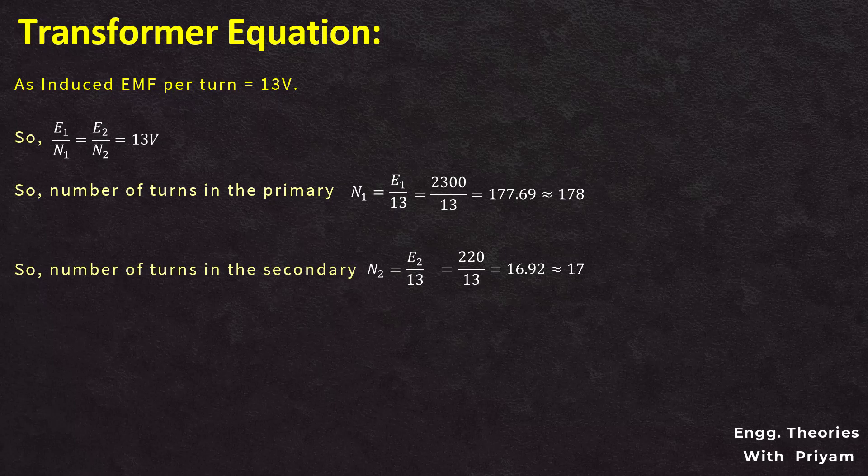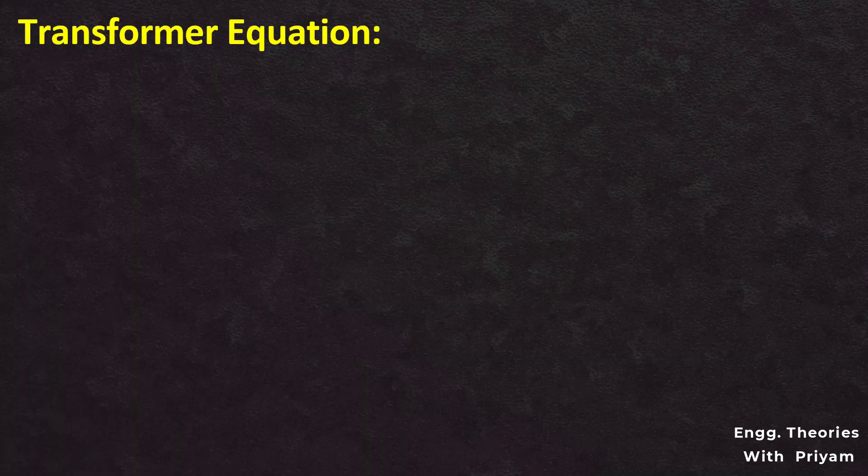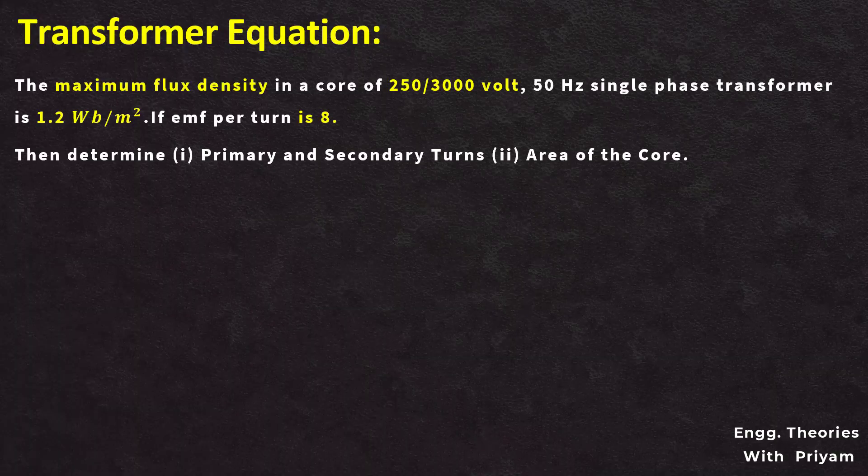Now let's see another mathematical problem where we are given the rating of a transformer core of 250 by 3000 volt, supplied by a 50 hertz single-phase supply, which has the maximum flux density of 1.2 Weber per meter squared. If the induced EMF per turn is equal to 8, then we need to determine the primary and secondary turns and the area of the core.